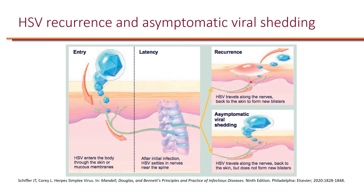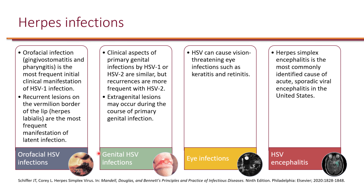This causes a problem because it's easy to avoid transmission when there is an active lesion, but people are unaware of asymptomatic viral shedding and there's not much they can do to prevent transmission in that case. The virus can also infect the orofacial area — anywhere around or inside the mouth — and this orofacial herpes is more common with HSV-1. Regardless of whether it's HSV-1 or HSV-2, the course is essentially the same.